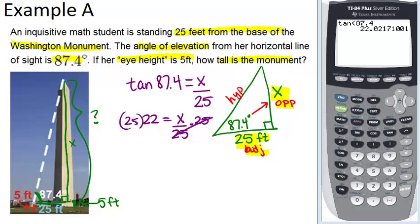So in the calculator, we can just multiply what we previously had by 25. And we get 550.